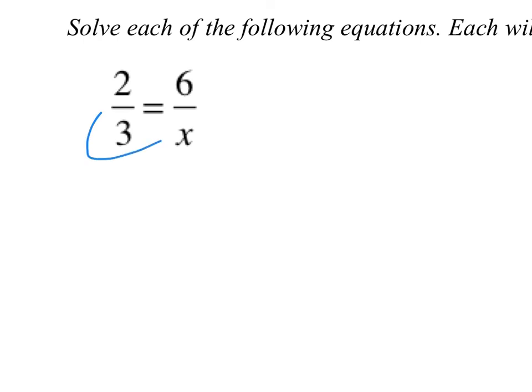2 over 3 is equal to 6 over x. I simply do my band-aid or my butterfly, whatever you want to call it, and I multiply. And I get 2 times x is 2x.